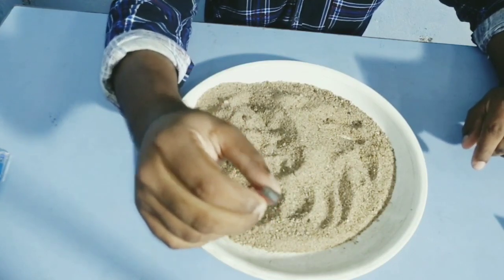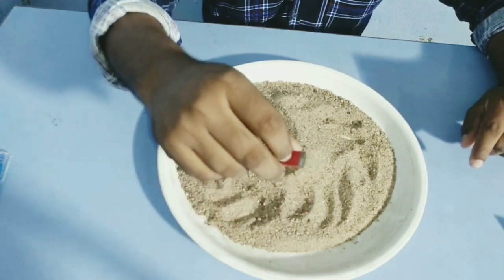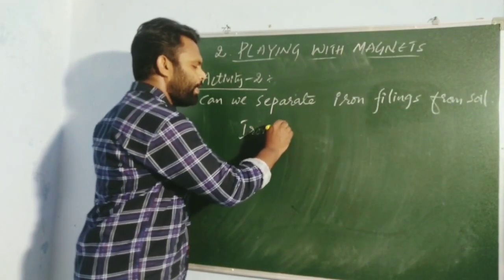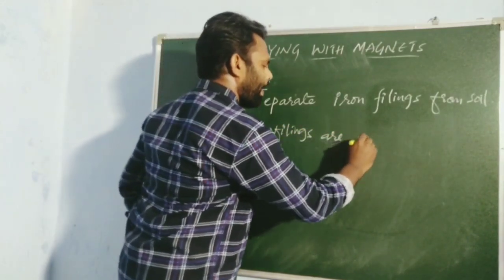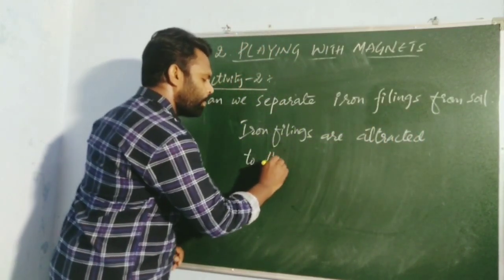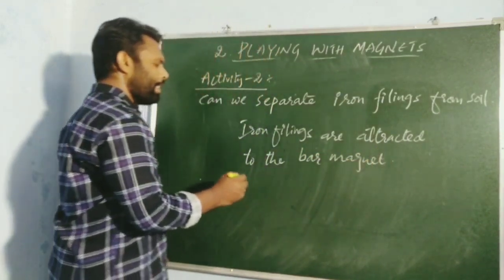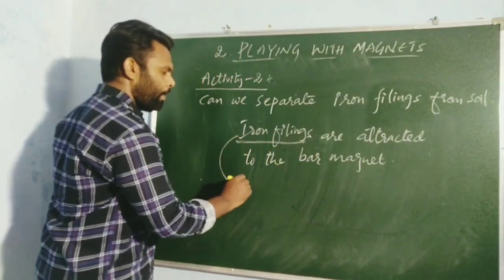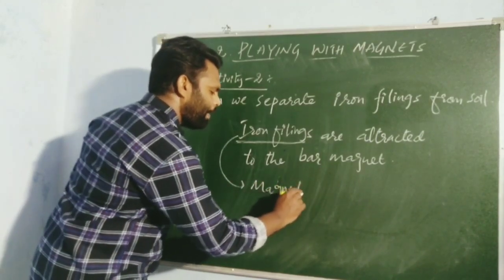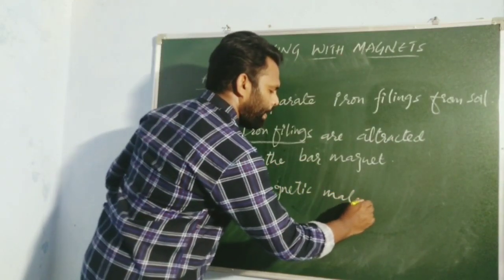So, this is the method to separate iron fillings from soil by using a magnet. In this activity, we have seen that iron fillings are attracted to the bar magnet. So, what can we say? These iron fillings are magnetic material. Why are they magnetic material? Because they are attracted towards the magnet — they are magnetic material.